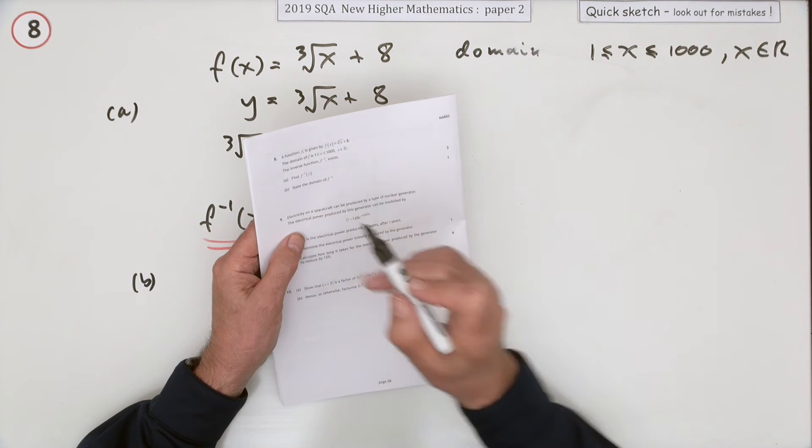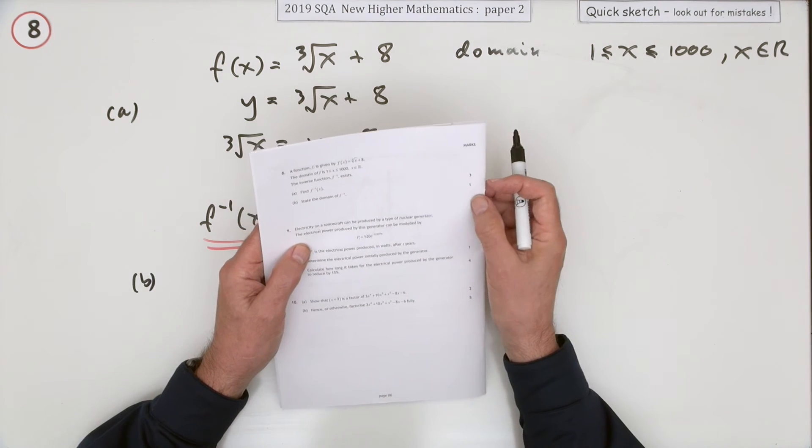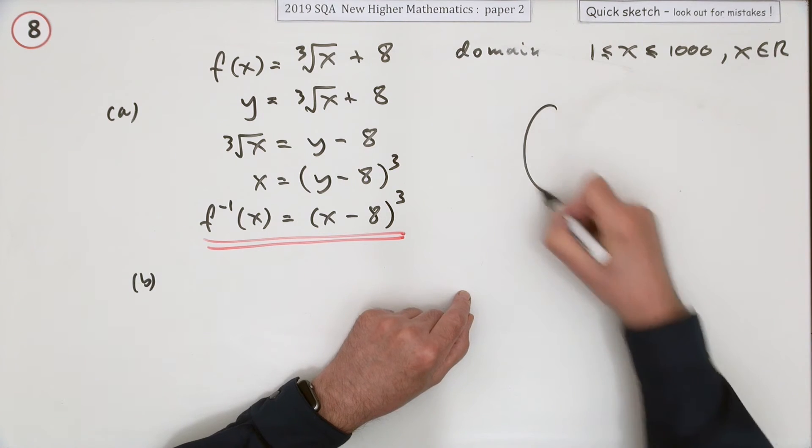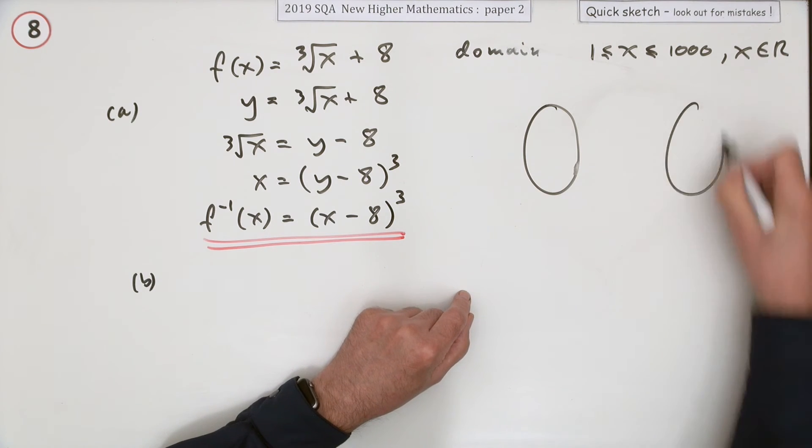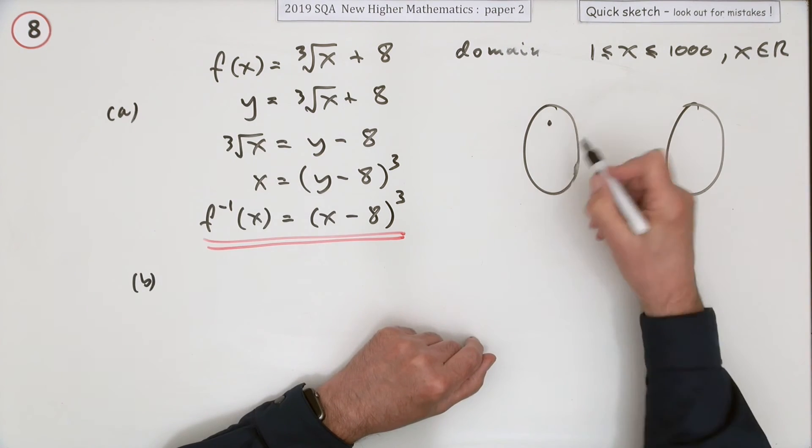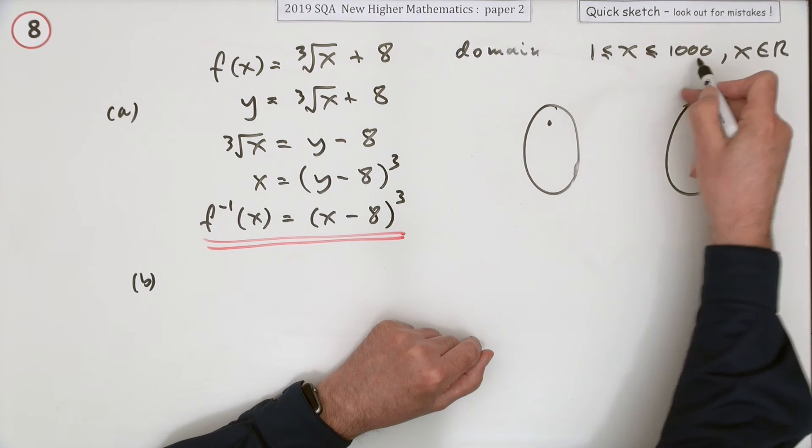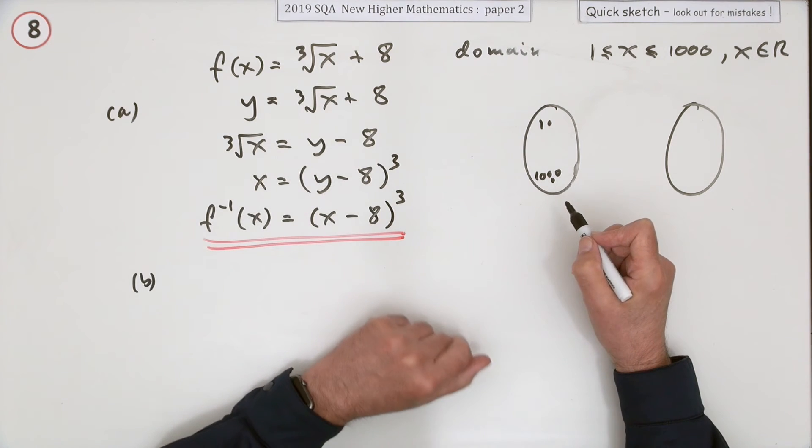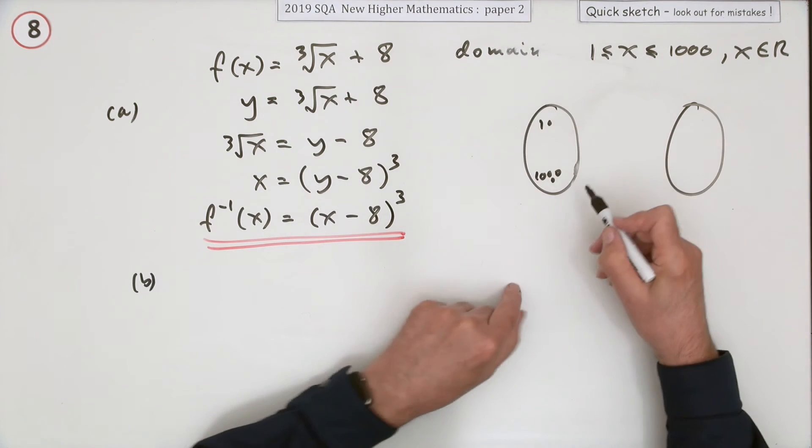Part b: state the domain of the inverse function of f, just for one mark. Might as well put down what it means here. For the original function f, it took an element of its domain which went all the way from 1 to 1000, and it was a smooth function within that, just smoothly increasing.